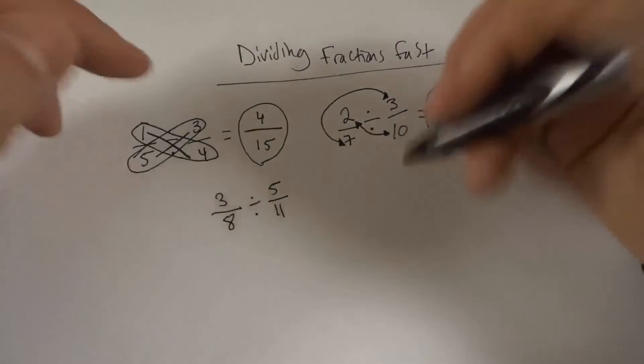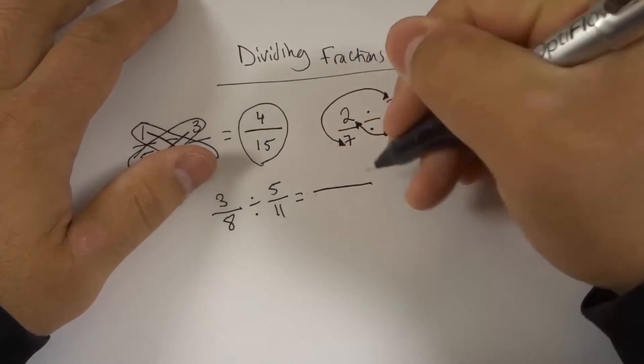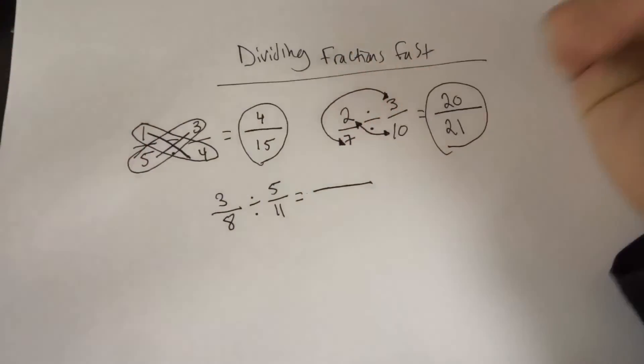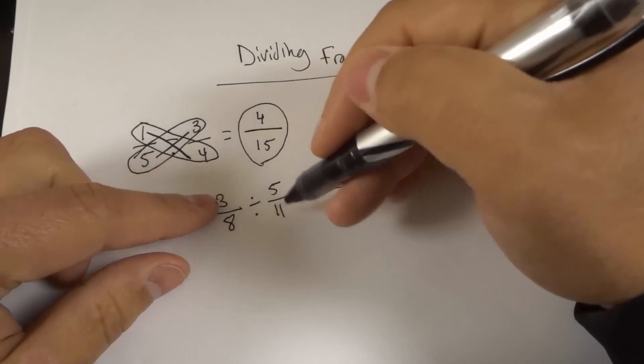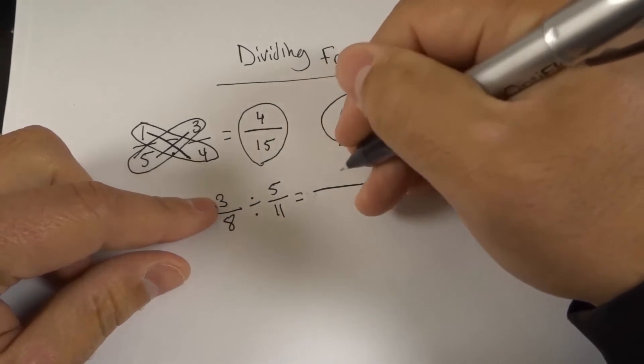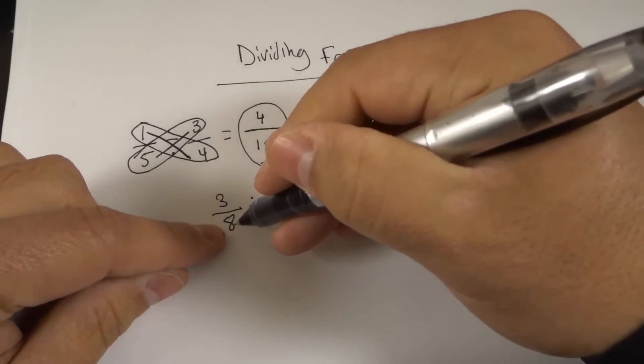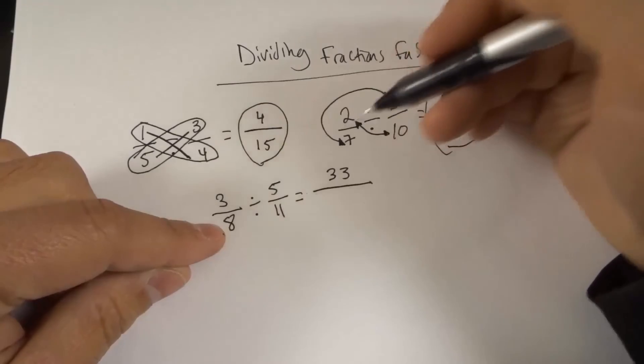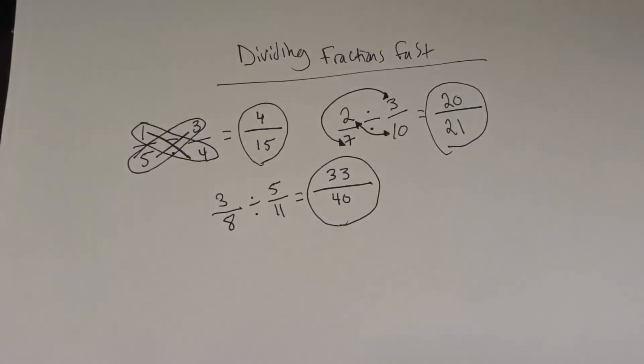Like bigger numbers here, right? So all that we have to do, once again, is put our equal sign and a line in the middle. We know that we have a number at the top and a number at the bottom. Now for this, I'm not going to draw any arrows. We're just going to go through the answer really quickly. 3 times 11, top left times bottom right. 3 times 11 is going to be 33. And then bottom left times top right, 8 times 5 is going to be 40. And our answer is right there.